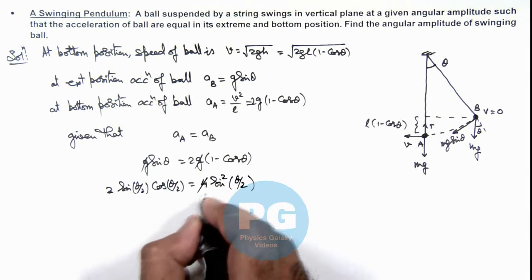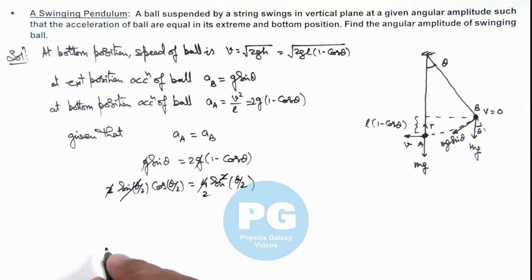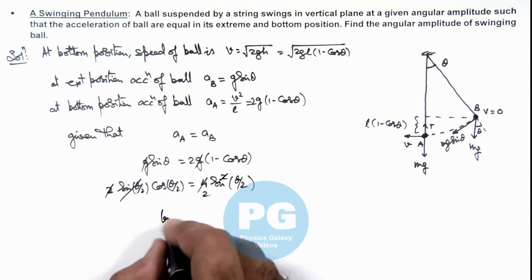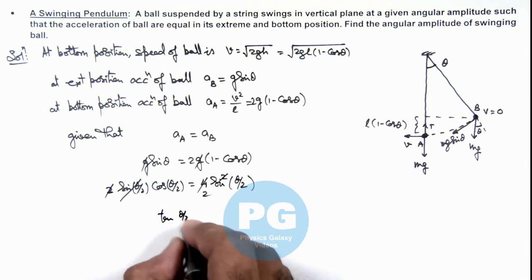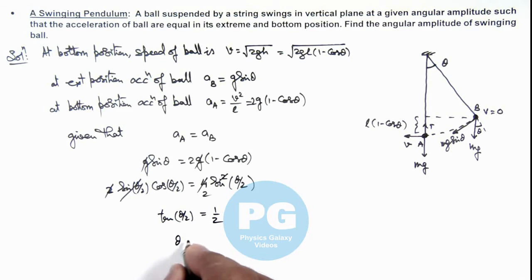Where 2 gets canceled out and sin(θ/2) gets canceled out, so this will give us tan(θ/2) is equal to 1/2. So the value of angular amplitude we get is 2 tan⁻¹(1/2), that will be the final result of this problem.